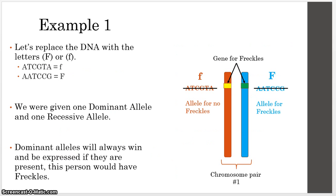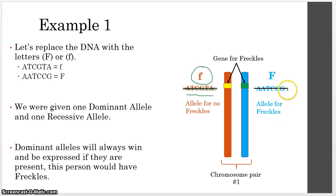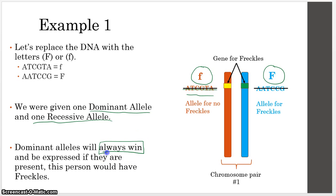Let's look at some examples. In example one, we replace the DNA sequences with our letter notation. The sequence for no freckles becomes lowercase f, and the sequence for freckles becomes capital F. So here we have one dominant allele and one recessive allele. Since there is a dominant allele present, the dominant trait wins every time — it doesn't matter if it's paired with one recessive. That means this person would have freckles, because there is at least one dominant allele.